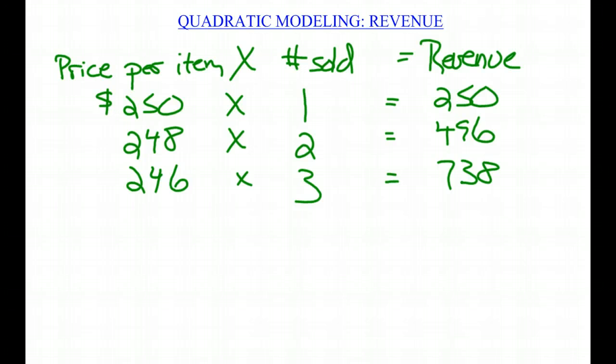Let's work this out. Suppose there are X tickets sold. The price per ticket is going to be $250 minus 2 times (X minus 1). Why is it X minus 1? Because it's in addition to that first ticket, so you only get $2 off for the second ticket.